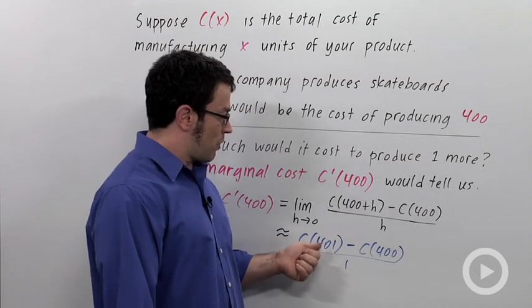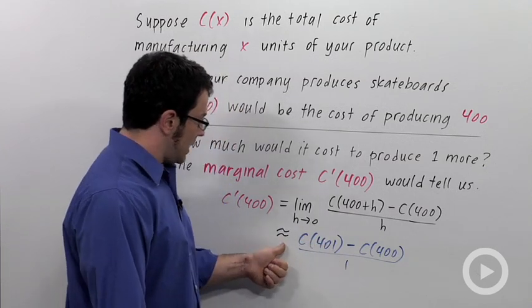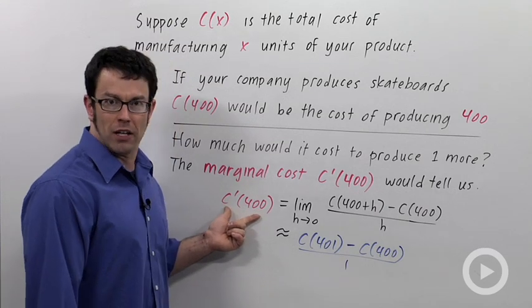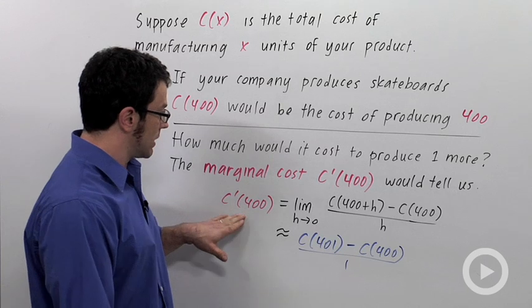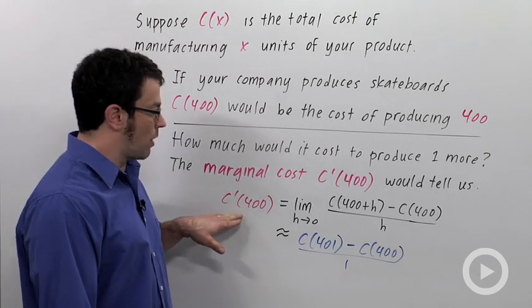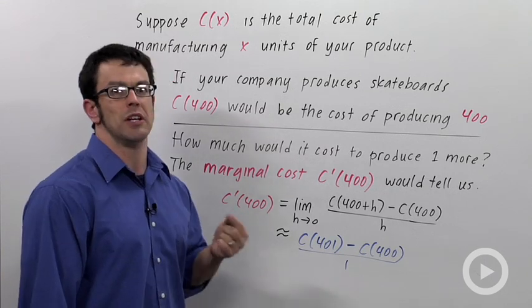So that cost of the 401st skateboard is approximately equal to the derivative of the cost function at 400. And that's why the marginal cost is often interpreted as telling us the cost of that 401st skateboard, the cost of producing one more.